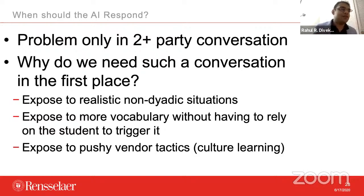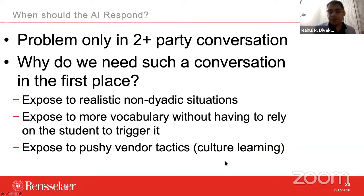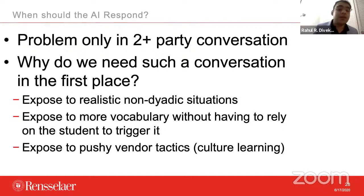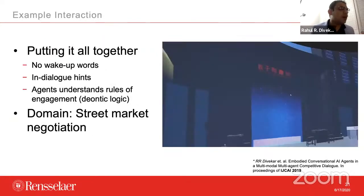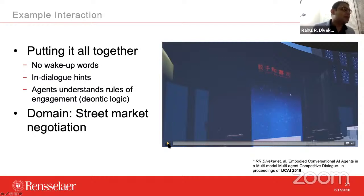One thing we can do is also try to teach culture along with language. Teaching culture is extremely important because someone who knows the language but not the culture is called a 'fluent fool' in literature and research. We don't want our students to be that. A group discussion gives a better idea of what's going on in a culture. Putting it all together, I'm going to show you a video of what this looks like — a street market negotiation domain.